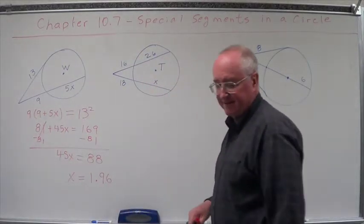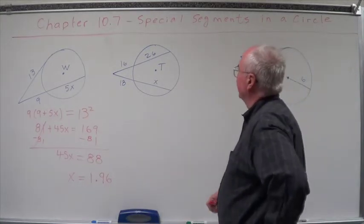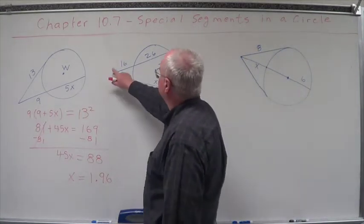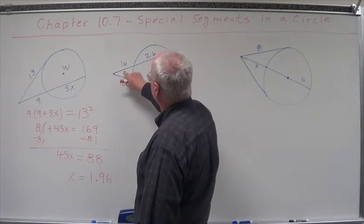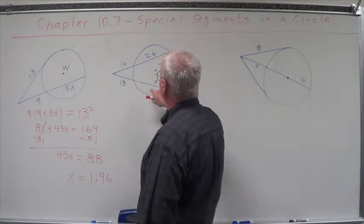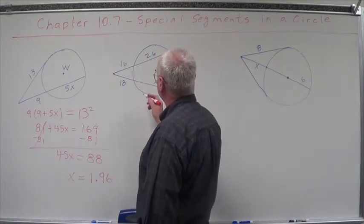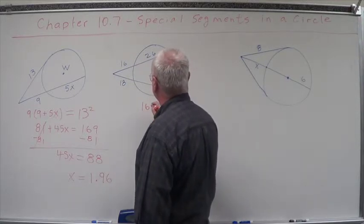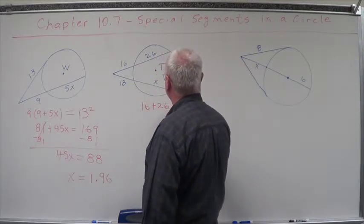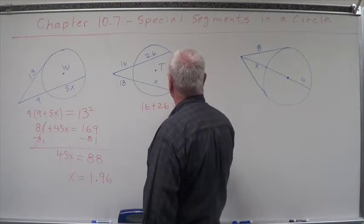Now this one, using the secant segment theorem, it's fairly simple. We're going to take this entire thing times the exterior portion, this entire thing times the exterior portion. Well, what's this? 16 plus 26 equals 42.